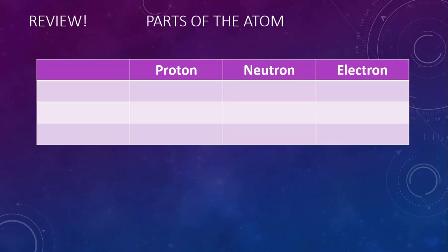There are two basic properties of these particles that we need to be familiar with. The first is mass. Just like any other mass we've talked about in this course, the mass of these particles is measured in kilograms. You won't be surprised to see how tiny the masses are. The proton and the neutron are both 1.67 times 10 to the negative 27 kilograms — that's about a billionth of a billionth of a billionth of a kilogram.